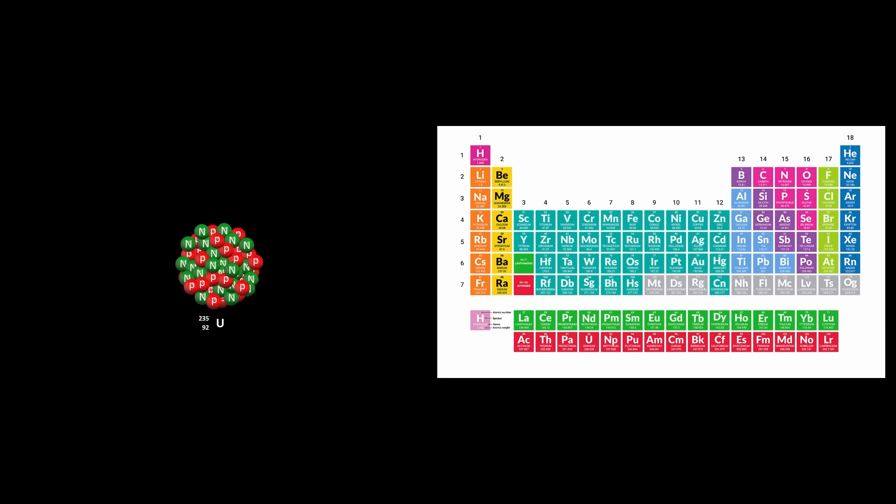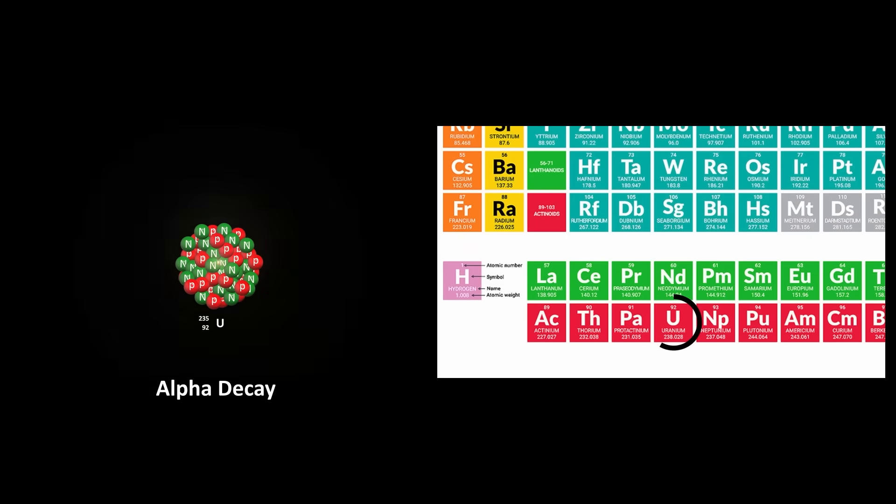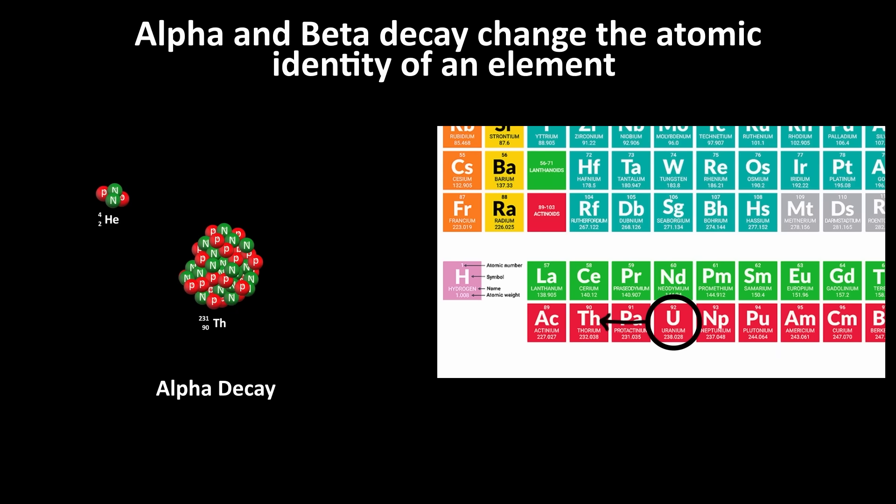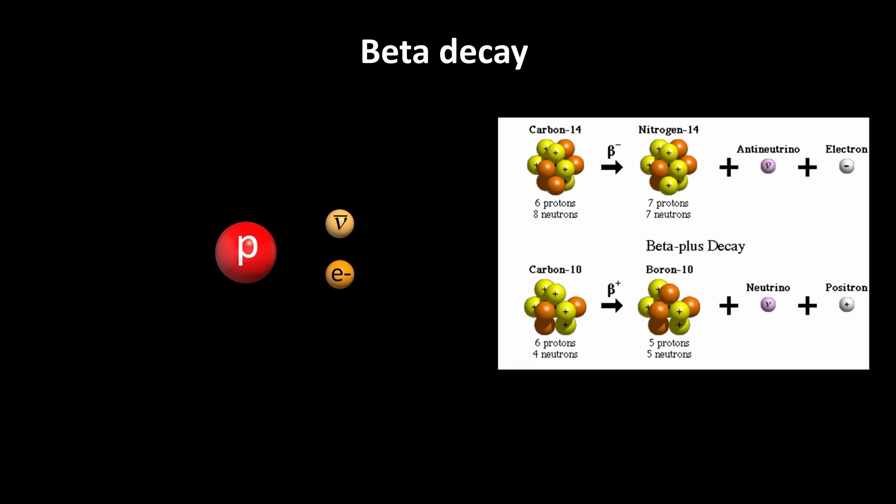Alpha and beta decay change the atomic identity of the decaying nucleus because they change the number of protons. Alpha decay subtracts two protons, so the element moves down two notches on the periodic table. Beta decay changes a neutron into a proton or vice versa, so it changes the type of element either up or down.